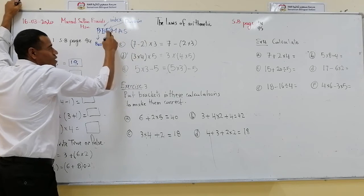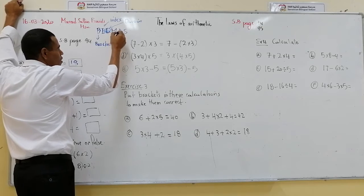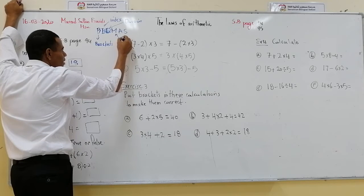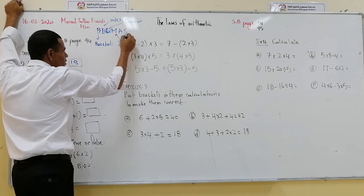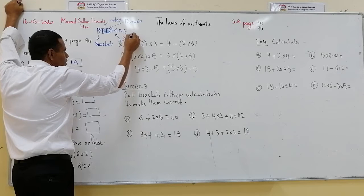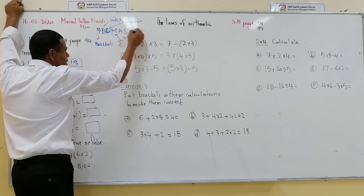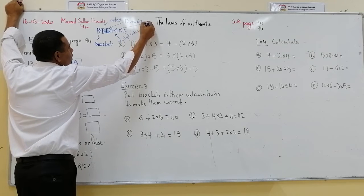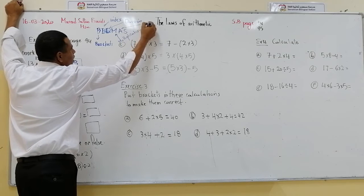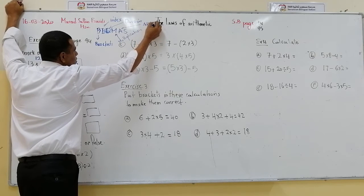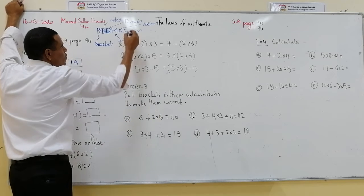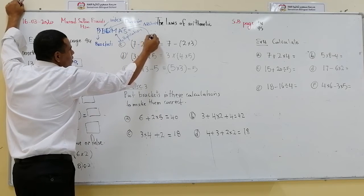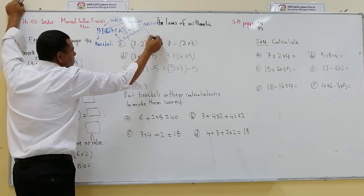If we don't have division, we move to Multiplication. If we don't have multiplication, we move to Addition. Then the last one — if we don't have addition, we move to Subtraction.